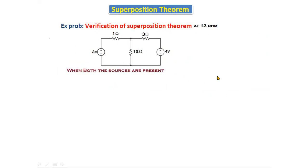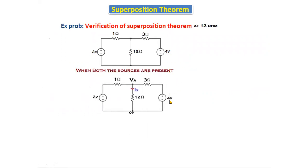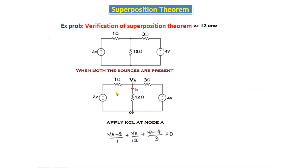Case one: when both sources are present, what is the response across the 12 ohm resistor? There is only one node, node A. We will apply KCL at node A using nodal analysis. Applying KCL at node A, we get: (va minus 2) divided by 1, plus va divided by 2...